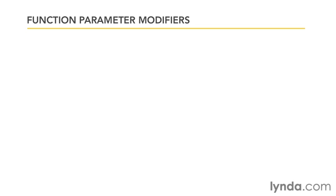Earlier in the course I talked about the difference between calling functions and passing parameters by value and passing parameters by reference. So if you haven't watched that movie, now is probably a good time to go watch it so you'll understand what's going on here, because I'm going to be talking about function parameter modifiers which allow you to change the way that parameters are passed to and from functions.